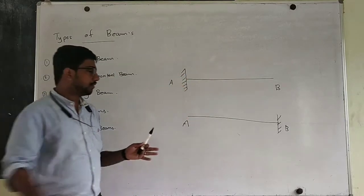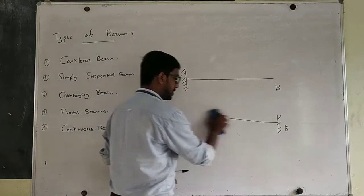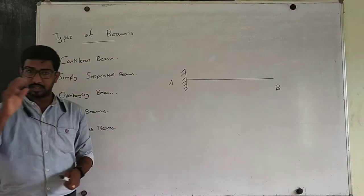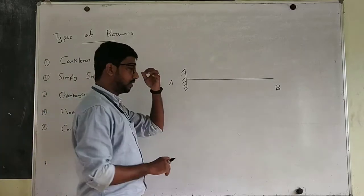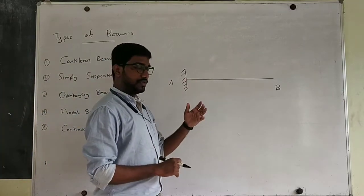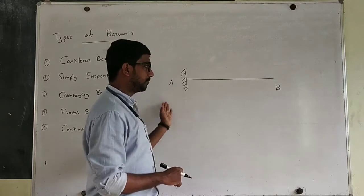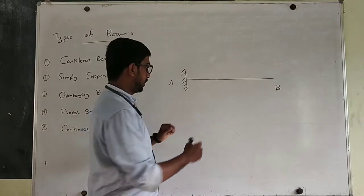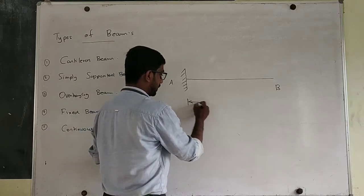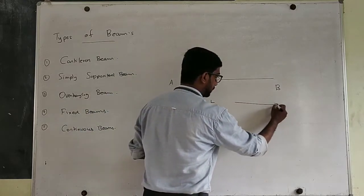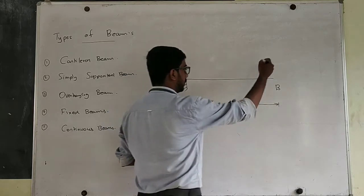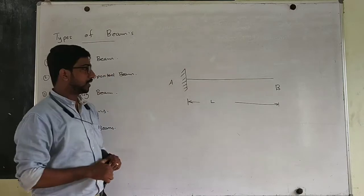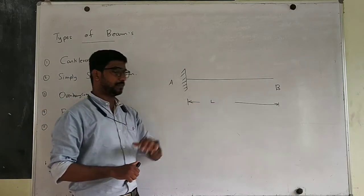Usually the left hand is fixed and the right hand is free. I can give you a beam which is fixed at the left hand and free at the right hand. A load on the beam — the load here acts as a concentrated load. This implies it is a cantilever beam with a concentrated load.